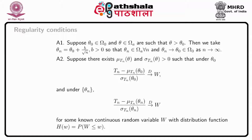Then we take theta_n equal to theta naught plus B divided by root n, where B is positive, so that theta_n belongs to omega_n for all n and theta_n tends to theta naught belonging to omega naught as n tends to infinity. Suppose there exist mu function of theta under T_n and sigma function of theta under T_n, positive, such that under theta naught, T_n minus mu(theta naught) under T_n divided by sigma(theta naught) under T_n converges to the distribution of W.